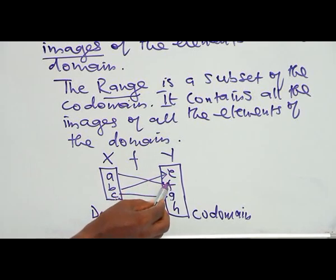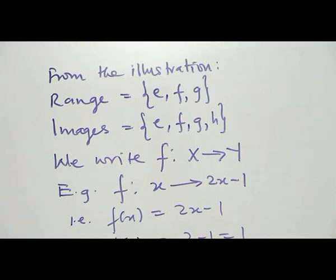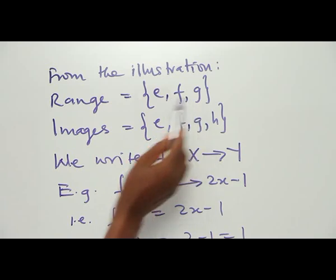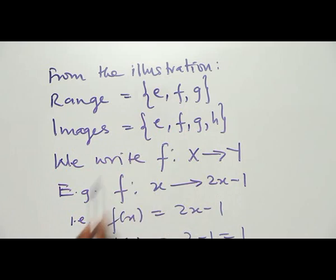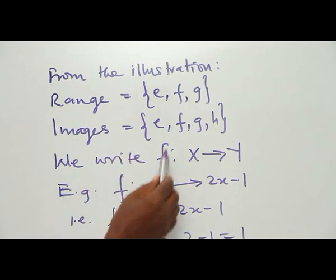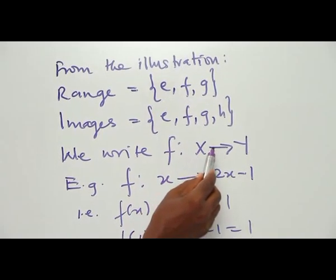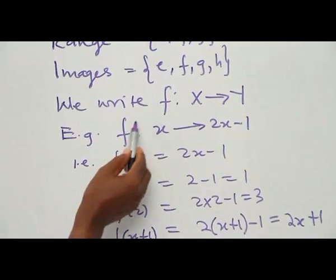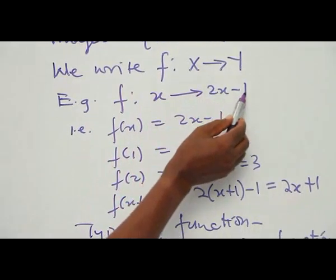The values E, F, and G are called the range, while E, F, G, and H are all called the images of these relationships. So the range is the set {E, F, G}, while the images include H as well. We therefore write that S is a function that maps elements in S to elements in Y — for example, S such that F(S) = 2S − 1.